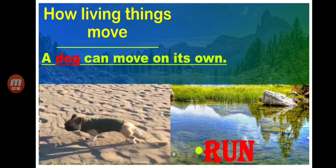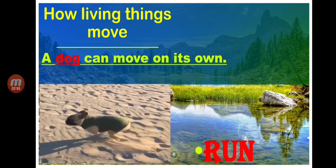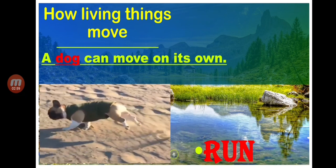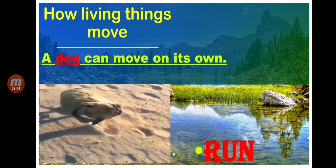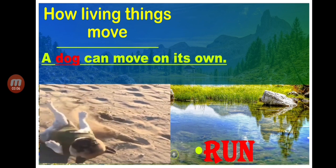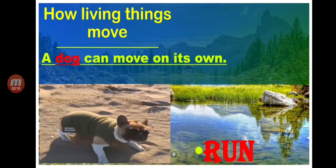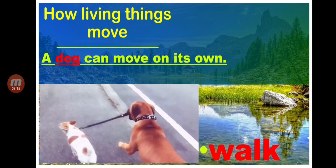Look at this video clip. That dog runs very fast! When the dog lost its balance, it dropped and rolled. That is how a dog moves on its own. Next, a dog can also move on its own by walking.